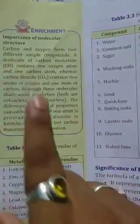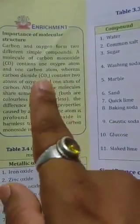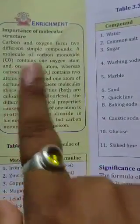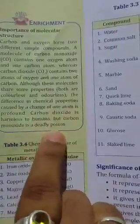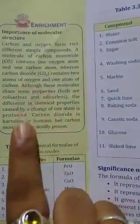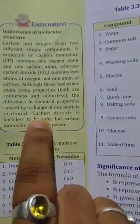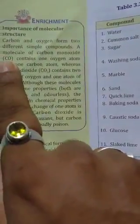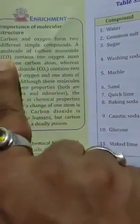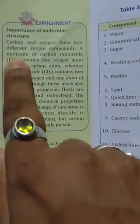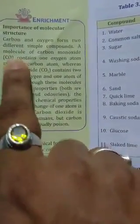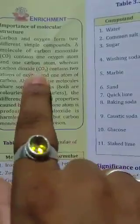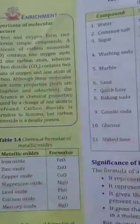Remember the difference between CO and CO2. CO is carbon monoxide, and CO2 is carbon dioxide. Carbon monoxide is a deadly poison, while carbon dioxide is harmless to human beings. The difference is that in CO, one carbon is combined with one atom of oxygen, whereas in CO2, one carbon is combined with two atoms of oxygen.